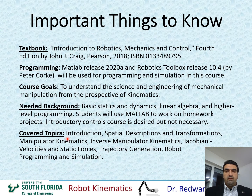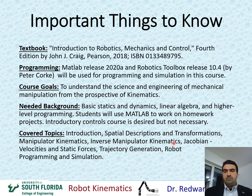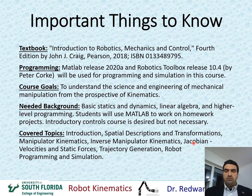The topics covered in this course include, after the introduction: spatial descriptions and transformations, manipulator kinematics — which covers forward kinematics and then inverse kinematics, which is the opposite of forward kinematics. Then we're going to talk about Jacobian, which includes velocities and static forces. Finally, we'll cover trajectory generation. I will actually cover trajectory generation before the Jacobian, because we need it for simulation before we talk about Jacobian. So I'll do trajectory generation first, and then go back to Jacobian velocities and static forces.